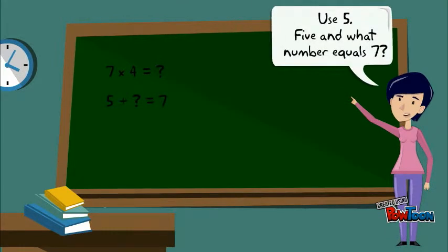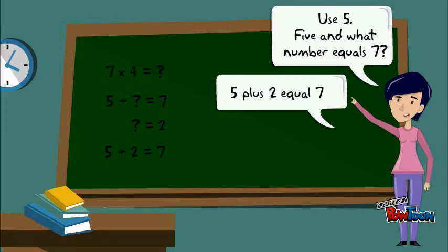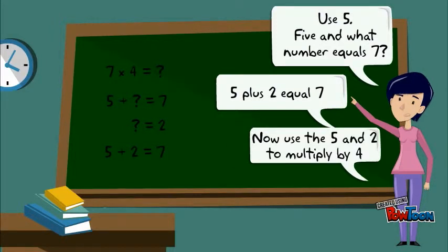Use 5. 5 and what number equals 7? 5 plus 2 equals 7. Now use 5 and 2 to multiply by 4.